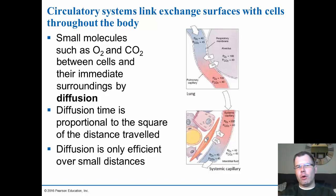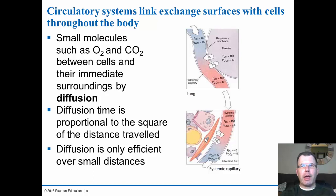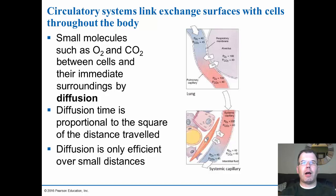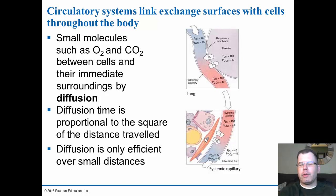Diffusion is only efficient over small distances, so the membranes have to be very thin. Around our lungs and around the tissues and organs we have lots of capillary beds so that gases can diffuse very easily. If we tried to diffuse through an artery or a vein it'd be very hard because smooth muscle and many other layers surround it. You have to get into capillaries in order for this to actually work properly.